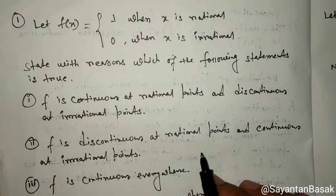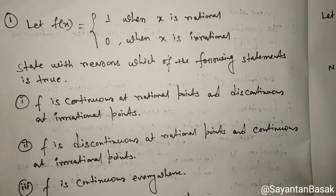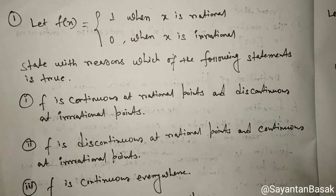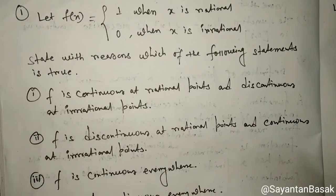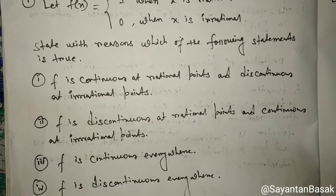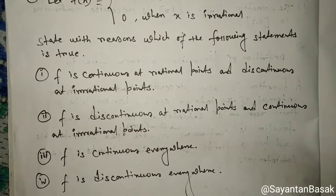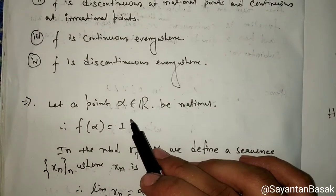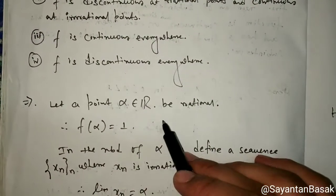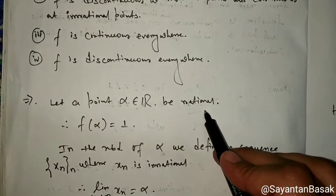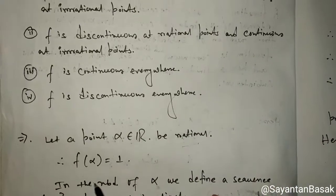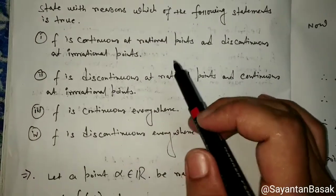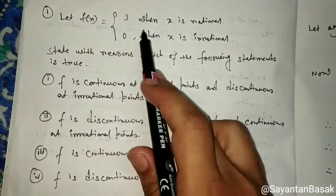Here the function f(x) equals 1 when x is rational and f(x) equals 0 when x is irrational. We have 4 options to make the right choice. Let alpha be a rational point, so f(alpha) is equal to 1.